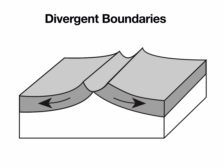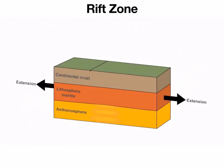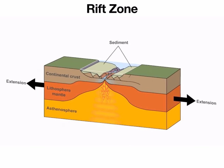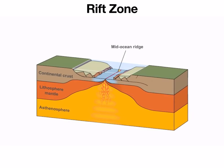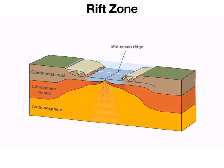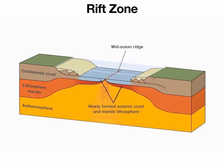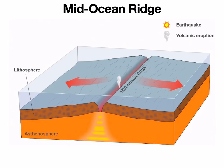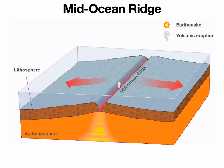Finally, we have divergent boundaries, where plates drift away from each other. If it happens on land, we have what's called a rift zone, where the land actually rips apart into two — we see this happening in eastern Africa right now at the East African Rift Zone. When the rock rips apart it allows magma to escape, so we get active volcanoes and some minor earthquakes, though not as significant as at convergent boundaries. Often we see this out in the middle of the ocean, which we call a mid-ocean ridge. Convection currents pull the plates apart, magma comes up in the middle forming mountains and volcanoes, and again some earthquakes.